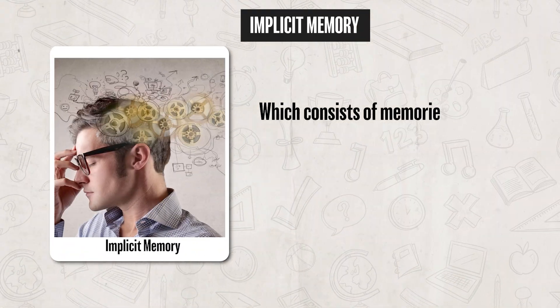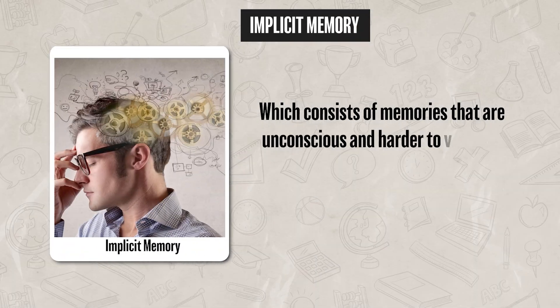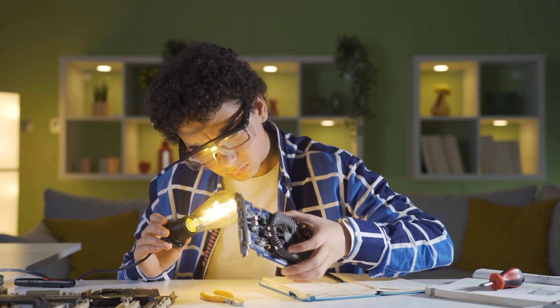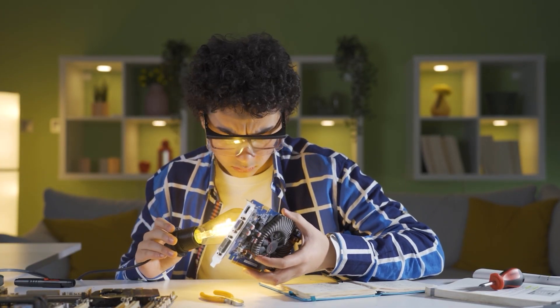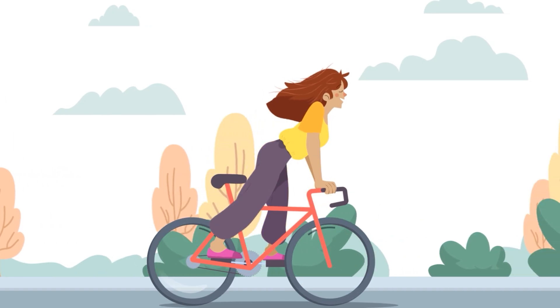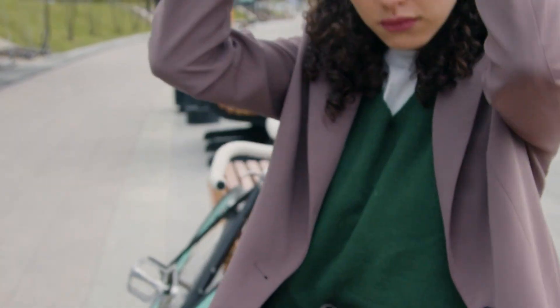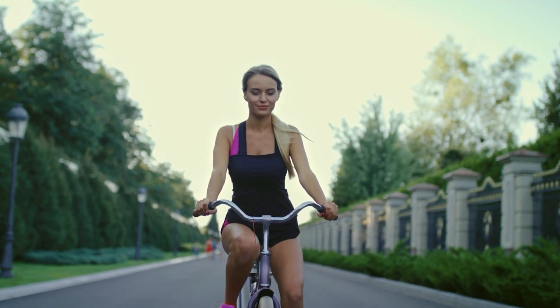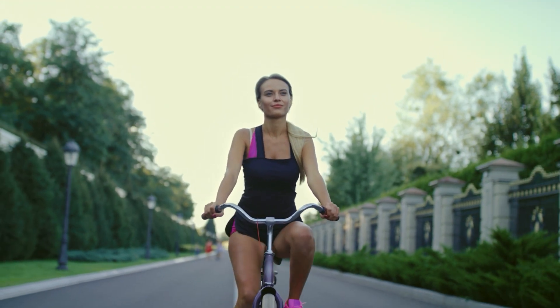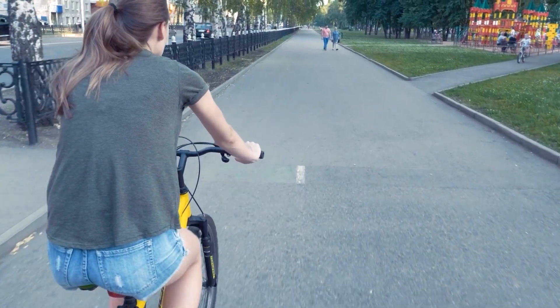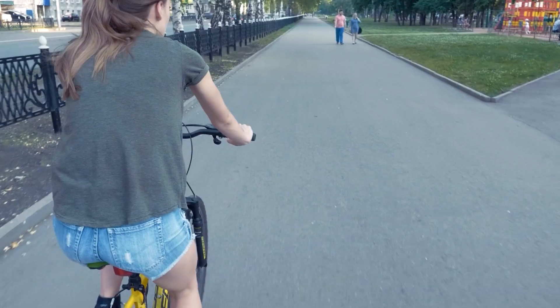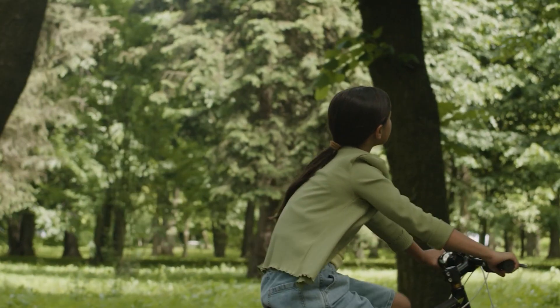Up next, there is implicit memory, which consists of memories that are unconscious. These memories are actually harder to verbalize — think of information or skills that you learn without even fully being aware of it. For instance, even if you haven't been on a bike in years, once you get on a bike, your body will remember how to balance and pedal without you having to consciously think through each step. Or when you drive home from school, you often don't think about every turn or street name — you just know the route, almost like you're on autopilot.